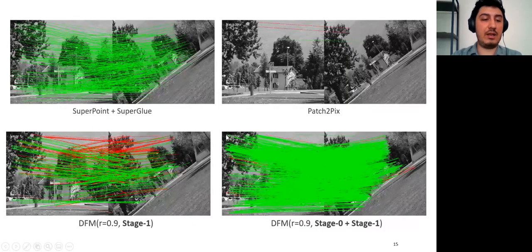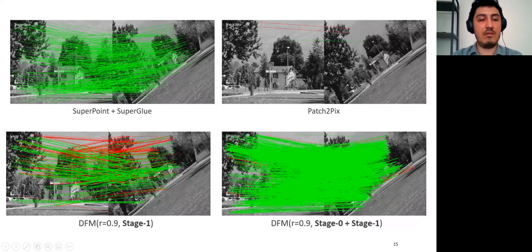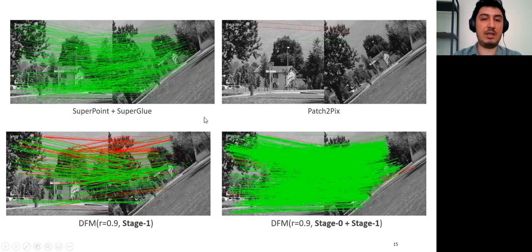Thanks to our rough alignment at stage 0, DFM is resistant to some level of inline rotations. You can see single-stage DFM results at the bottom left, and obviously it is worse than the two-stage approach which can be seen at the bottom right. Note that patch2pix has no alignment step. If we apply our stage 0 as a preliminary step before it, patch2pix may also perform well under some amount of inline rotations. We also leave as a future work applying our stage 0 to other algorithms as a preliminary step.